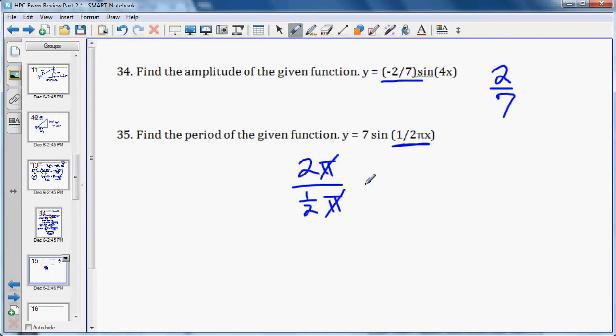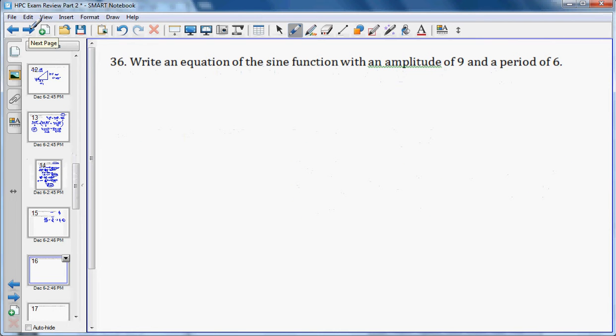Write an equation of the sine function with an amplitude of 9 and a period of 6. Amplitude is 9, so that goes out front. We'll do y equals plus or minus 9 sine. And then to figure out the B value, that's the coefficient for x, we do 2π over the period, which will reduce to π over 3. Don't forget to put a variable in there, x or theta or t, any of those is fine. But we have plus or minus 9 sine of π over 3 x.